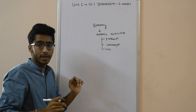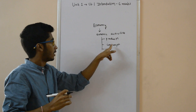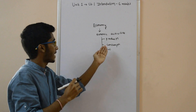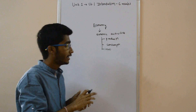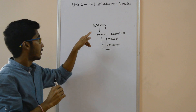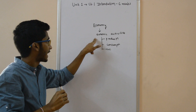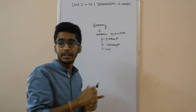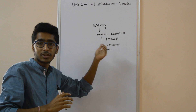Firms or producers produce goods. We consumers consume those goods. Then firms invest. So these are all economic activities. In the economy, economic activities are carried out so people can generate income, and it provides them with a sense of living.